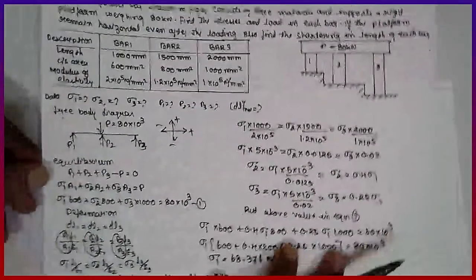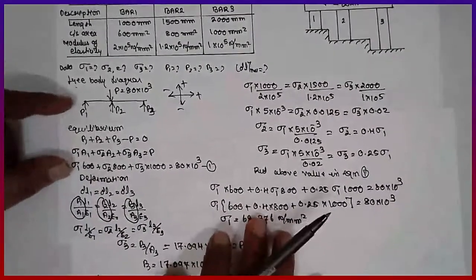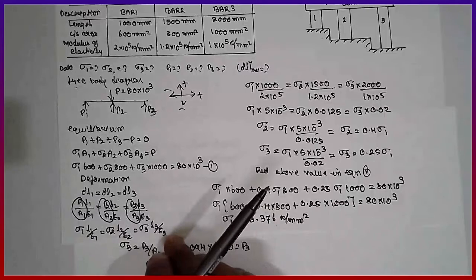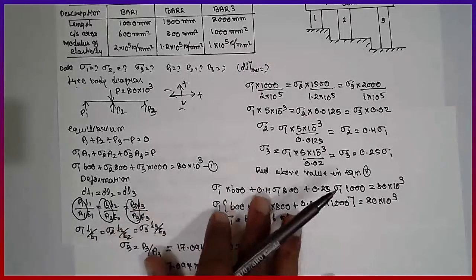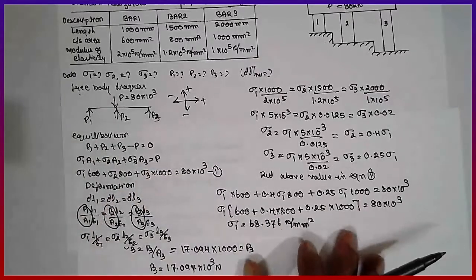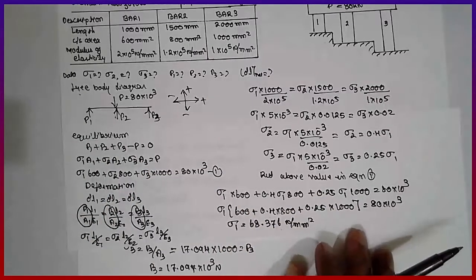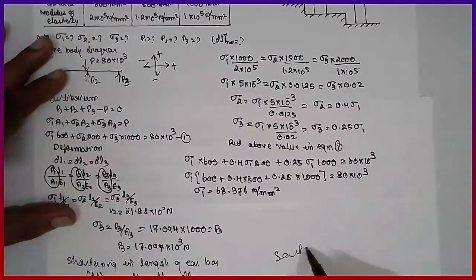We cannot solve this directly using a calculator's simultaneous equation function because there are 4 unknowns, and most calculators do not support solving 4 unknowns simultaneously. Therefore, you have to follow this procedure in order to obtain the answer. I am Soutash Gayanankar. Thank you very much.